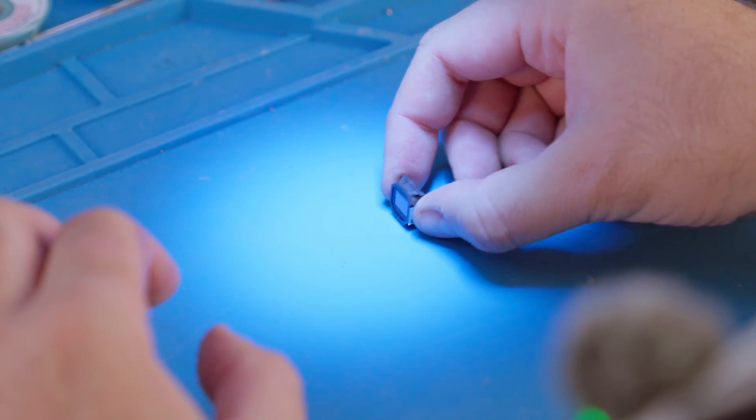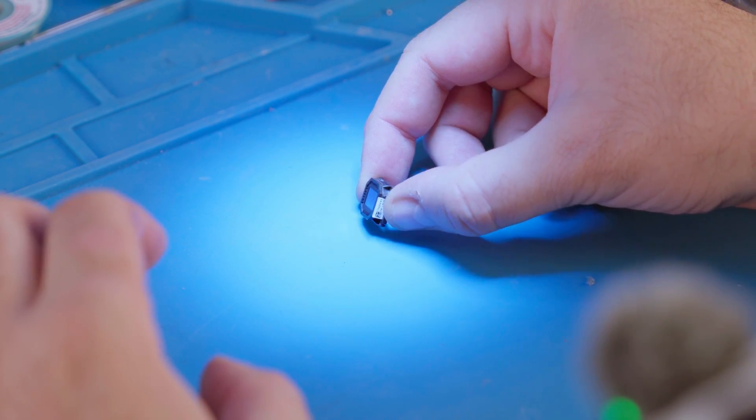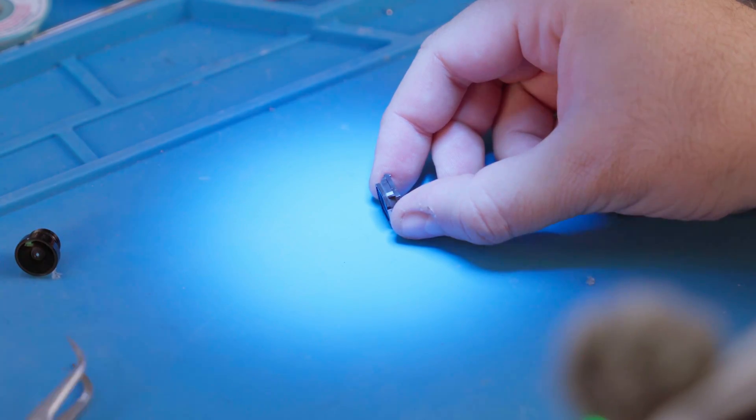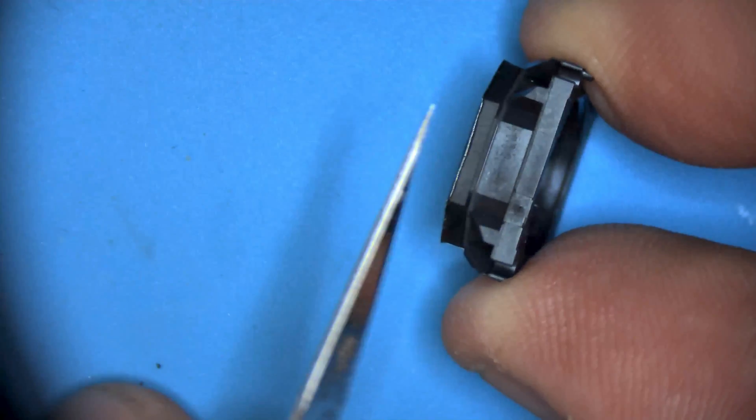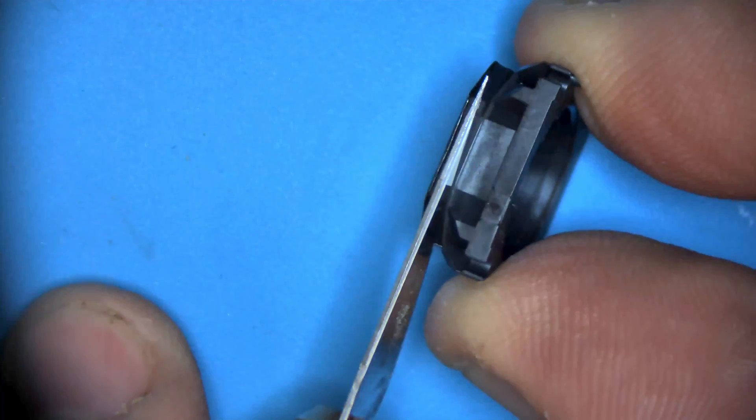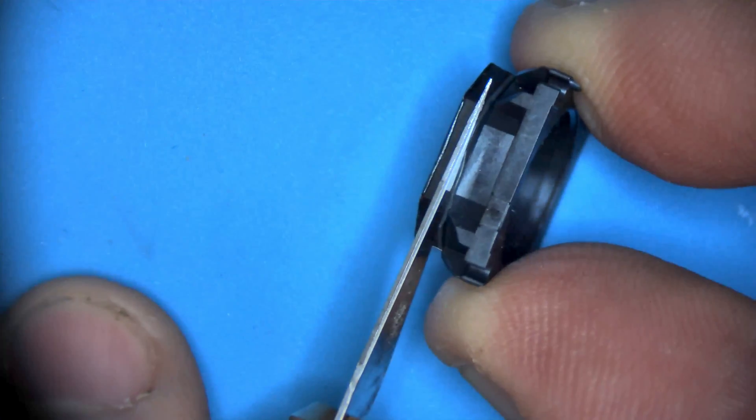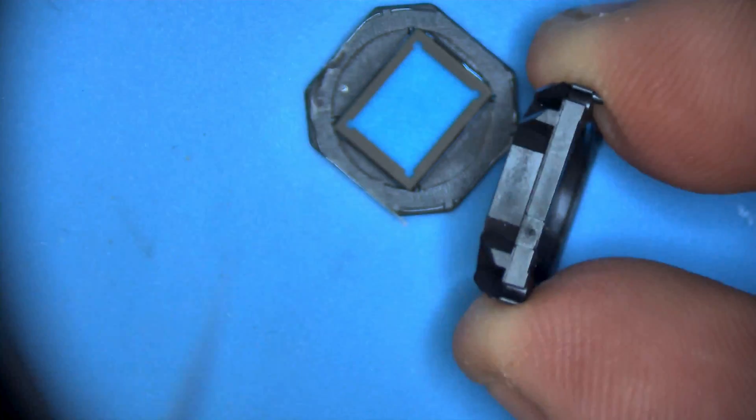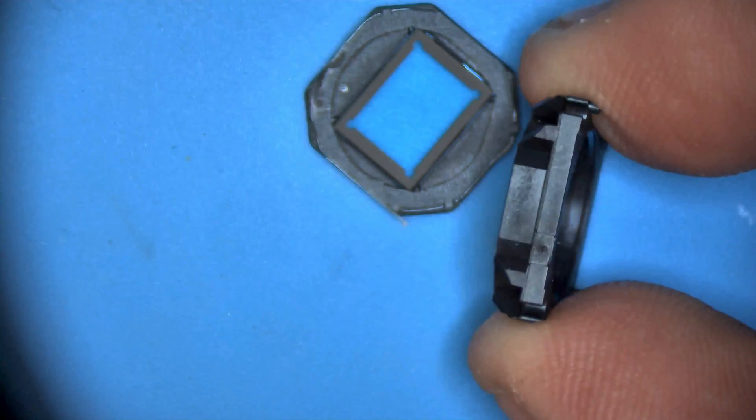Now we want to unstick the UV filter at the back. So I'm going to take my hobby knife and slip it in between. There we go. It was lightly softened by the heat we applied. This piece is no longer useful, so to the bin.